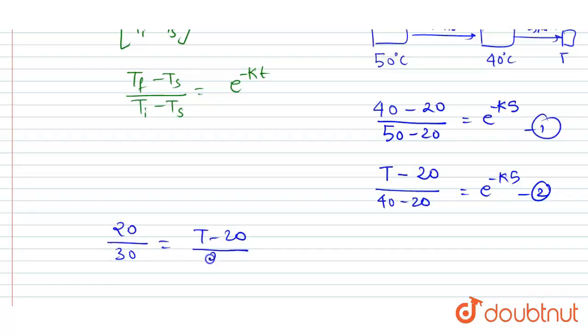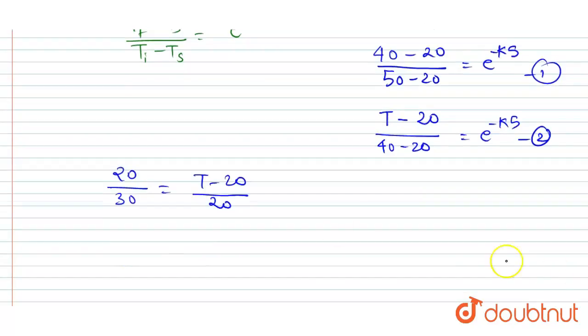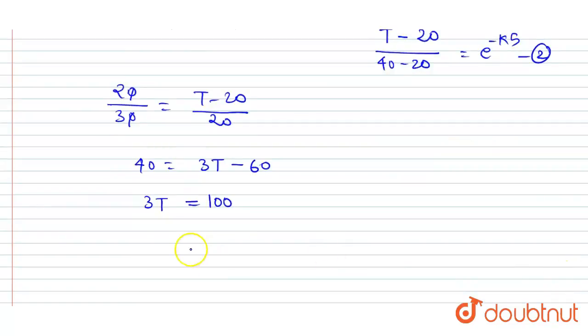T minus 20 divided by 40 minus 20. So this will get cancelled out and you will get 20/30 equals (T - 20)/(40 - 20). Cross-multiplying: 40 minus 20 times 20 equals 30 times (T minus 20), so 400 equals 30T minus 600. From here I will write 3T equals 100, and T will equal 100 by 3 degrees